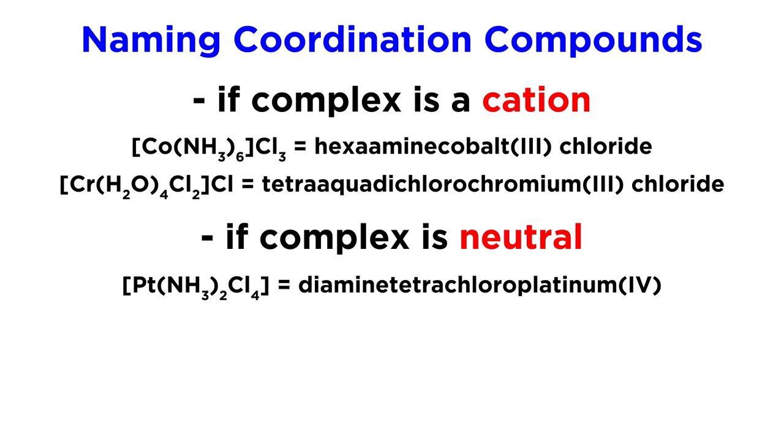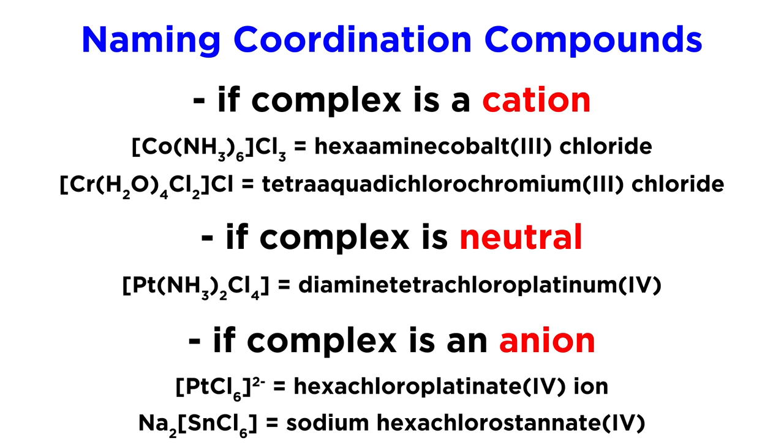When the complex as a whole is neutral, we will follow the same rules as for cations, and in this case there necessarily will not be any counter ions to list. When the complex is an anion, however, we will have to add the suffix -ate to the metal, giving us things like platinate instead of platinum, and so forth. With stannate, we will see that sometimes the Latin name is used for the metal atom instead of the name of the element itself.